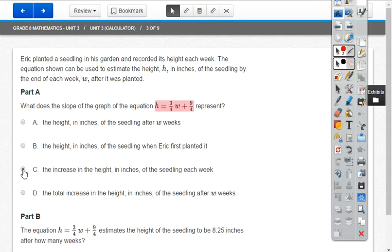Because the height in inches, that's the overall height right? So that's this h value. The slope is the increase that we get each week. So therefore this is the answer.